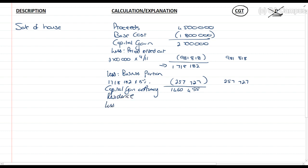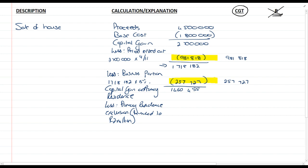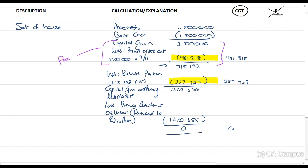From that we deduct our primary residence exclusion, and very importantly this is limited to 2 million rands. Students often try to apportion this 2 million — that is wrong. You only apportion for ownership; you have already done the apportionment by removing the business portions. So on your capital gain portion, 2 million is excluded from capital gains tax. It is not a deduction — it means excluded — so there is no further capital gain on that portion. The rental period falls under paragraph 47, the business portion under paragraph 49, and the primary residence exclusion under paragraph 45(1)(a).